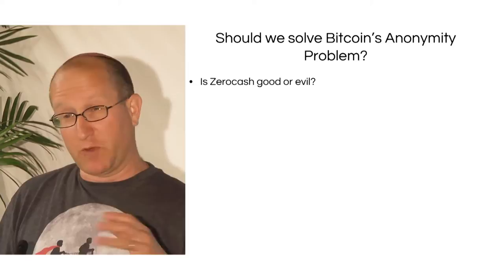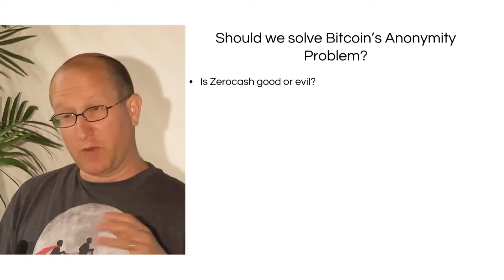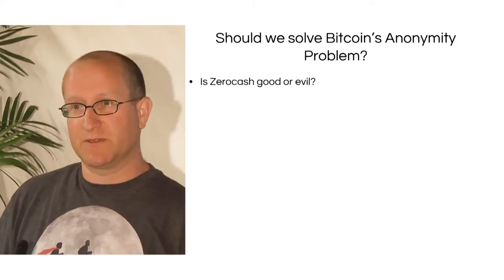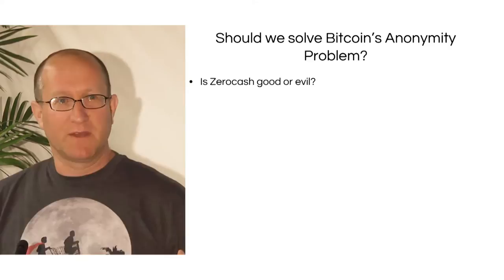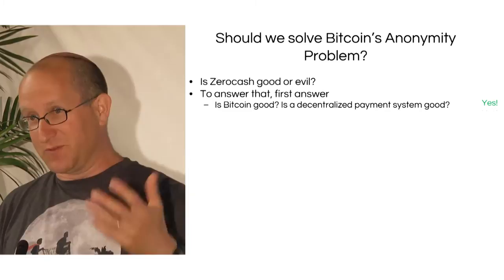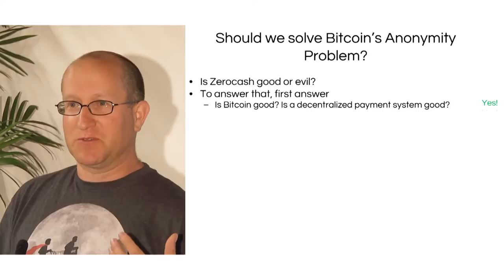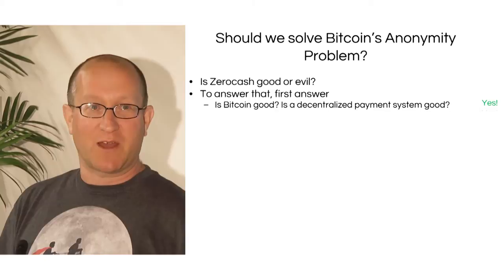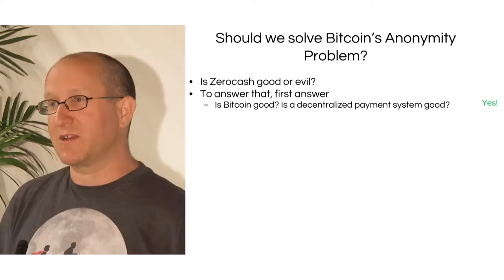Before going further, I want to address the question that was also raised with ZeroCash's predecessor, ZeroCoin: should we even be doing ZeroCash? Should we solve Bitcoin's anonymity problem? Some people say Bitcoin is already far too anonymous and used only for bad purposes. To answer this, we first have to ask: is something like Bitcoin — a decentralized payment system — good or bad? Because that also can be misused.